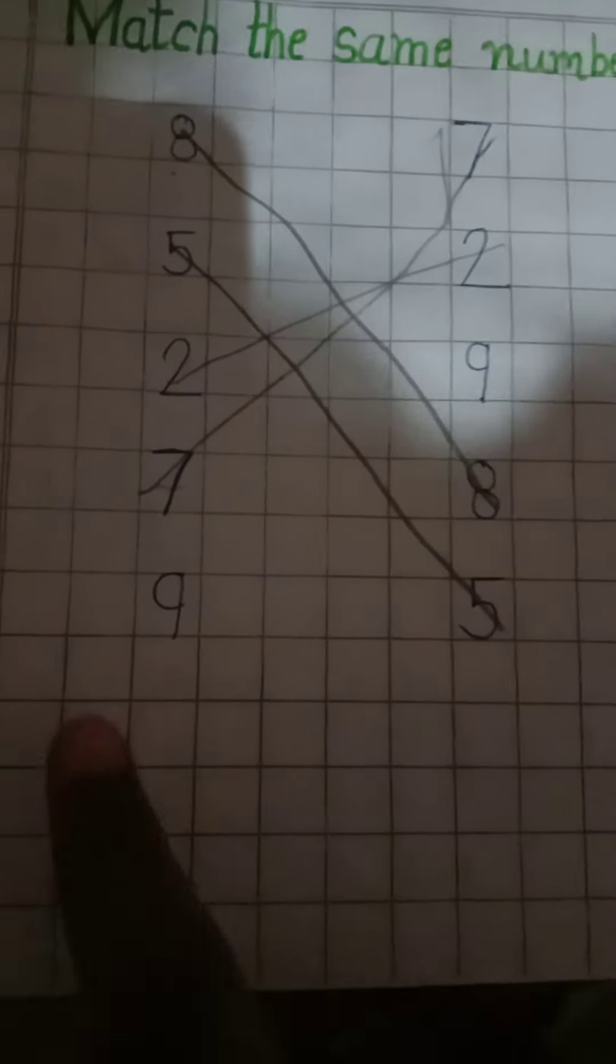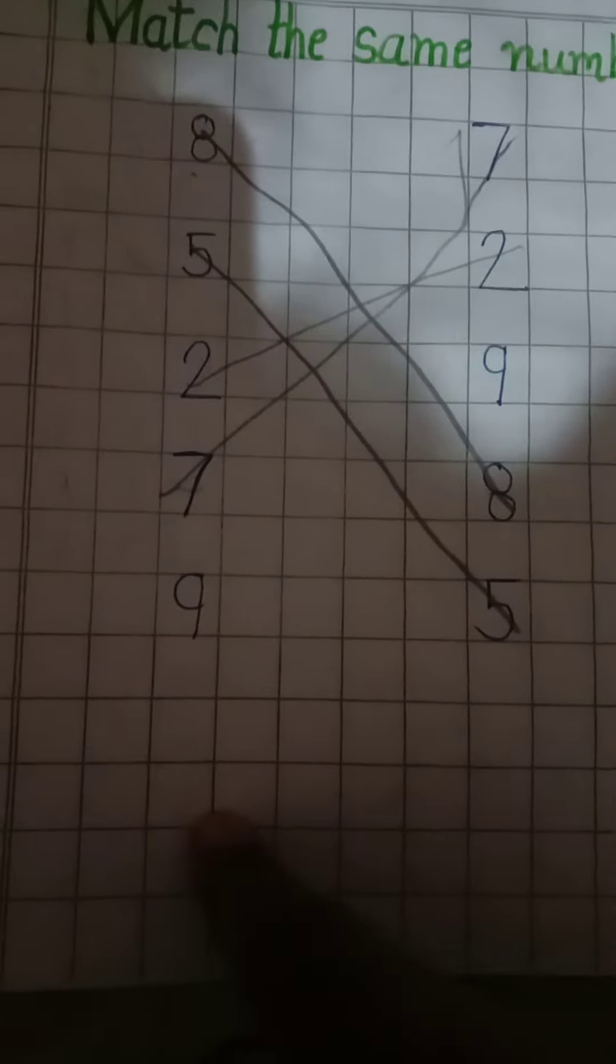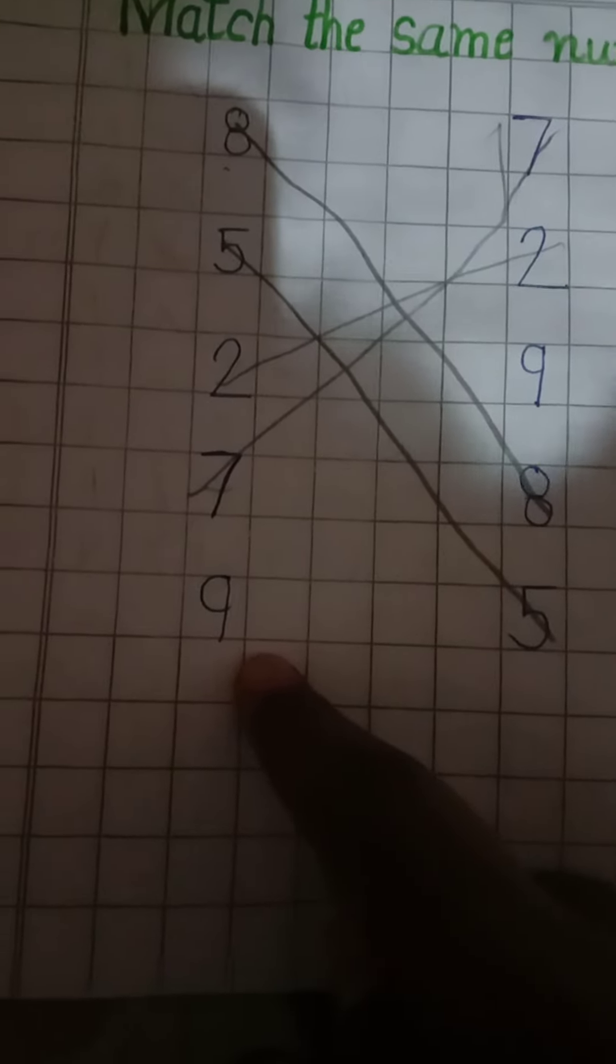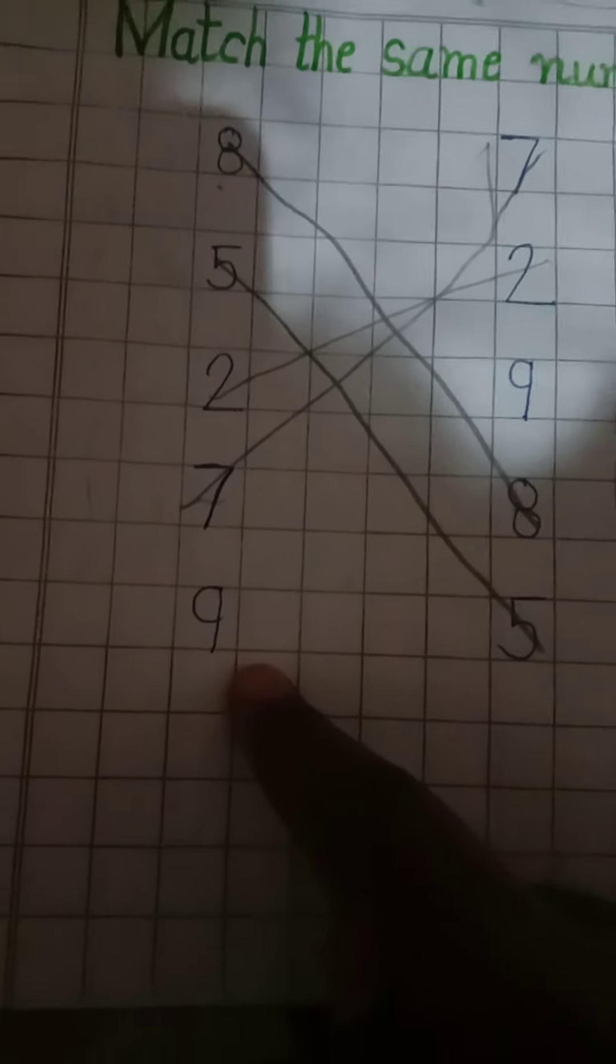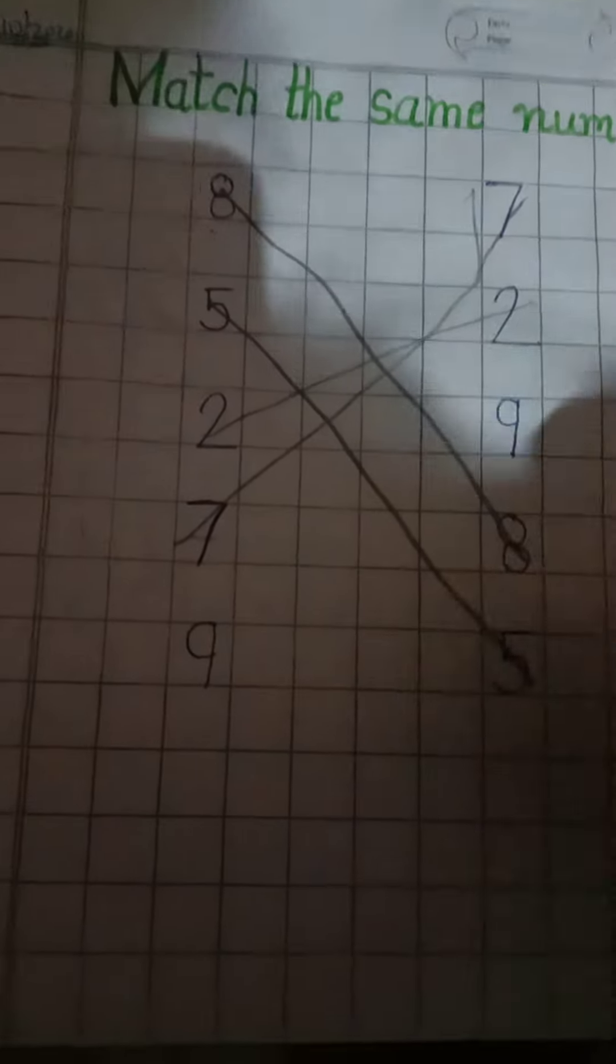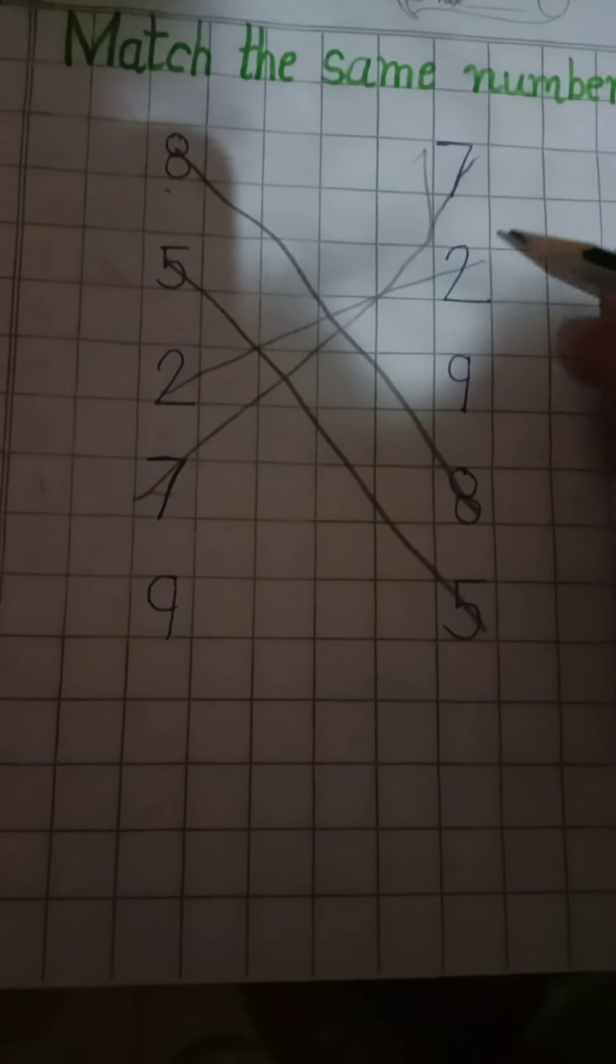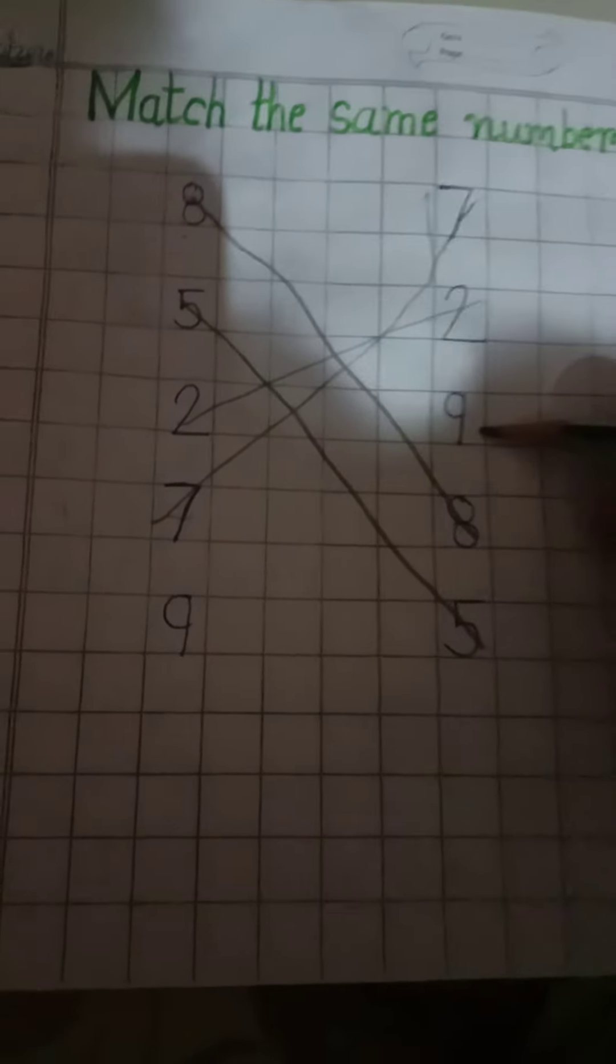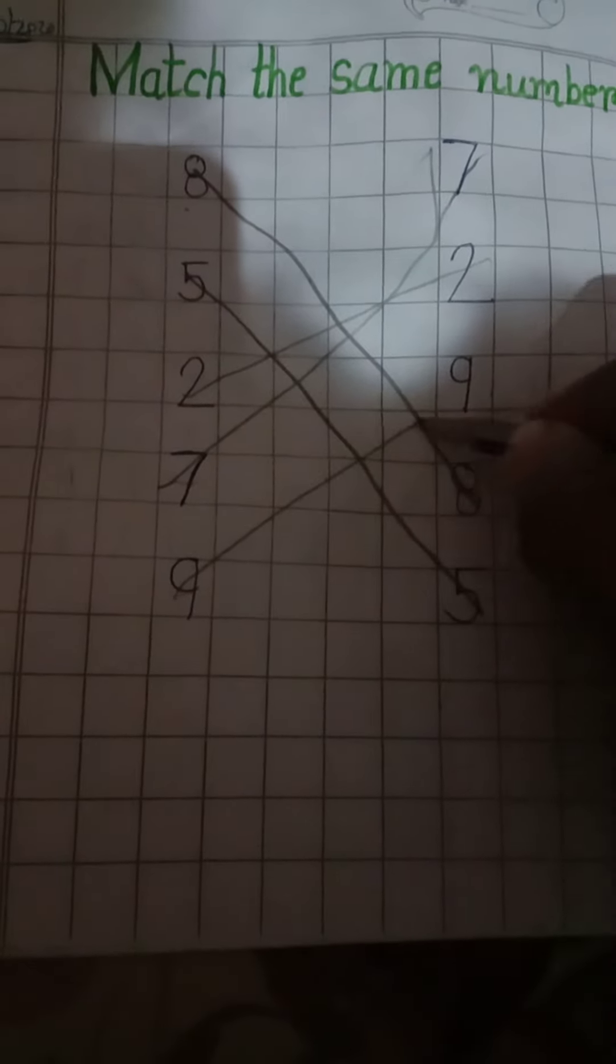Now, one curve and one standing line. Which number is this? 9. Where is the number 9? Yes, it's a number 9. So, match the number 9 with 9.